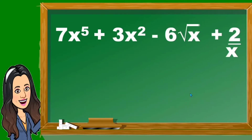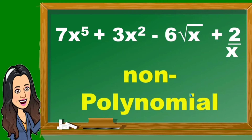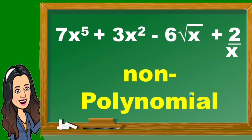How about this one? Given 7x raised to 5 plus 3x squared minus 6 square root of x plus 2 over x. Is this polynomial or non-polynomial? This is non-polynomial. Why? Because if you're going to observe the third term, negative 6 square root of x — if we write square root of x into another form, that is the same as x raised to 1 half. Therefore, the exponent is a fraction.